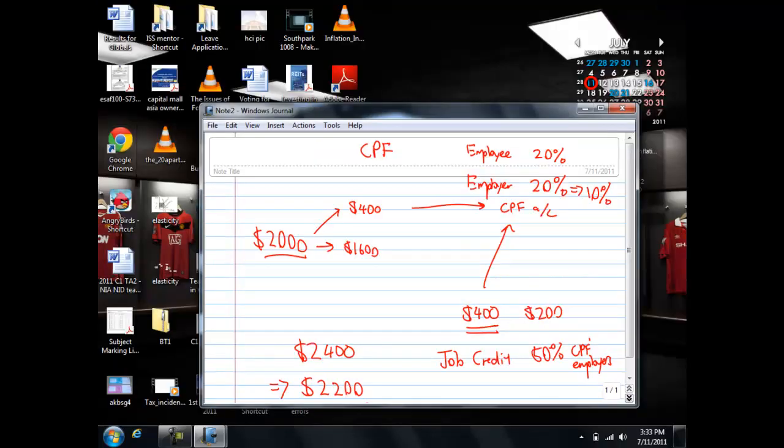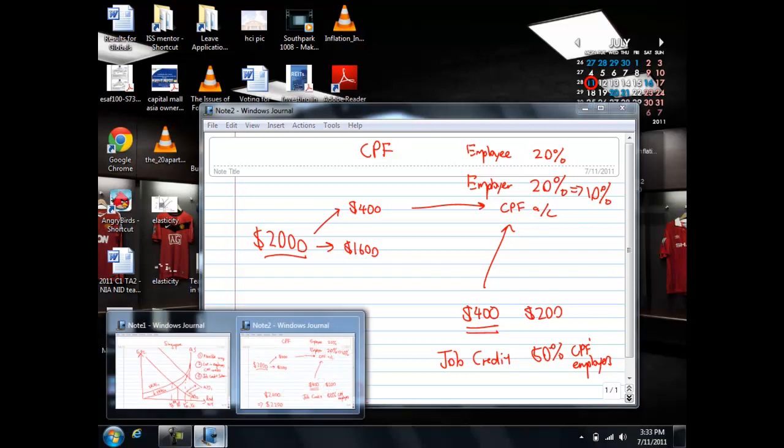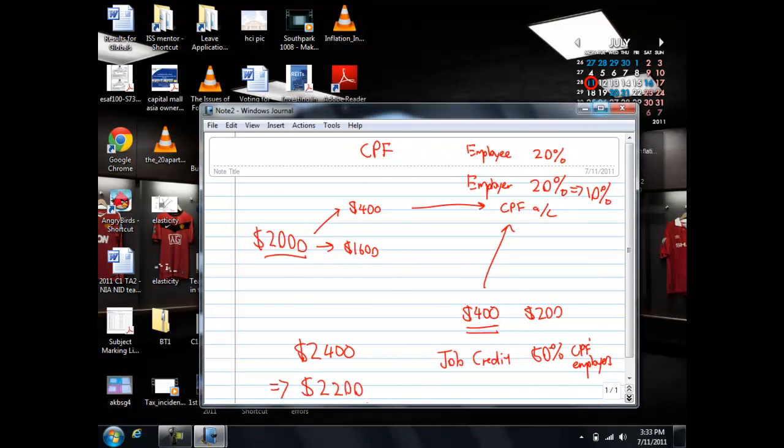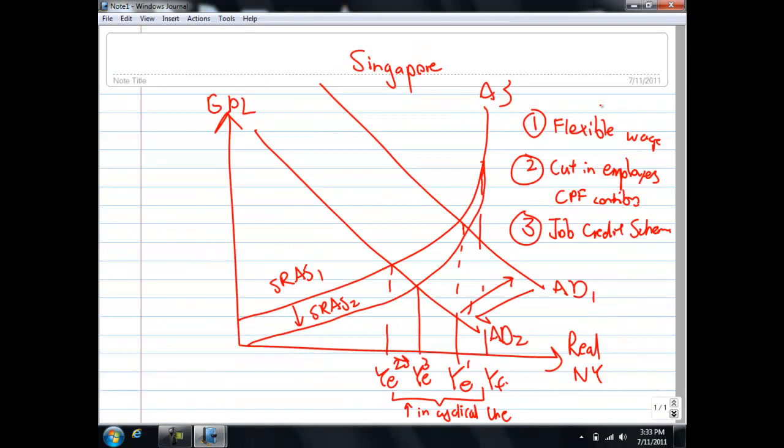You can see that both of these policies work basically by lowering the aggregate cost of production. All these three schemes work by cutting the cost of production to the firm by shifting SRAS1 to SRAS2, and this will cause the rise in cyclical unemployment to be much less. But as you can see, no wage scheme can actually totally restore back the original equilibrium. We have to wait for the US to recover before AD2 can finally shift back to AD1. But this is what we do in the meantime to minimize the cyclical unemployment.